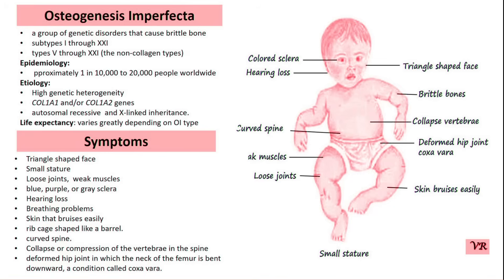The management and therapy of Osteogenesis Imperfecta are multidisciplinary and focused on improving quality of life, preventing fractures, enhancing bone density, and treating any associated symptoms. While there is no cure for OI, various interventions can significantly improve the function and well-being of affected individuals. A team of specialists is often involved in the care of individuals with OI, including orthopedic surgeons, endocrinologists, physical therapists, pain specialists, geneticists, dentists, and audiologists.